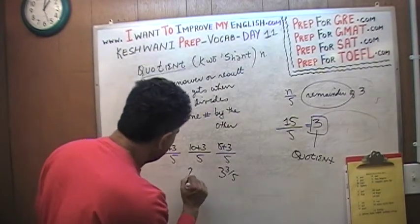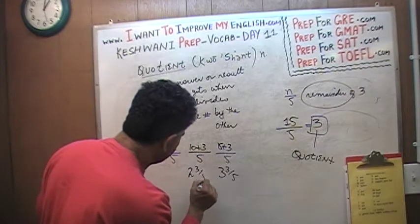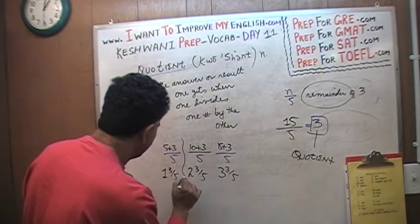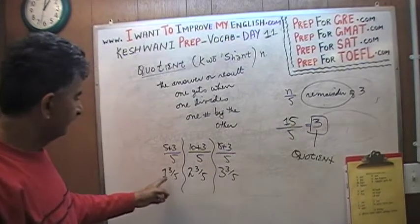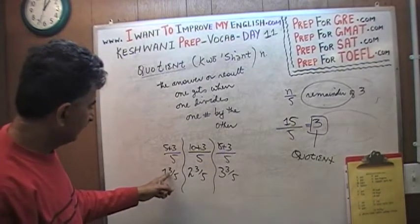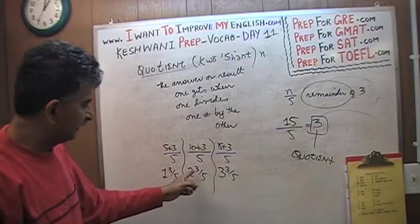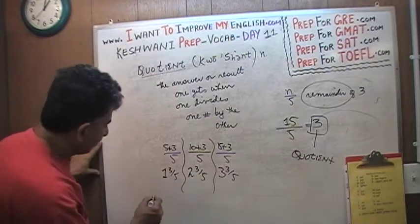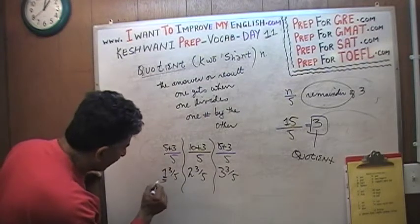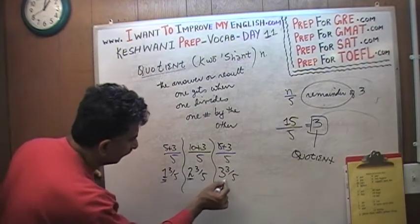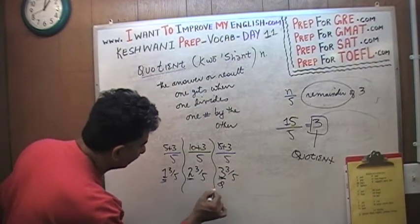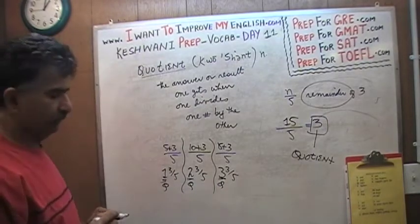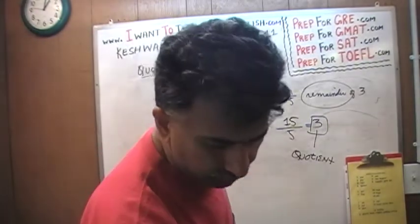The results are 3 and 3-fifths, 2 and 3-fifths, 1 and 3-fifths. The '3' you see in the fractional part — 3-fifths, 3-fifths — those are the remainder. The whole number parts — 3, 2, 1 — those are the quotients. So don't confuse the two concepts.